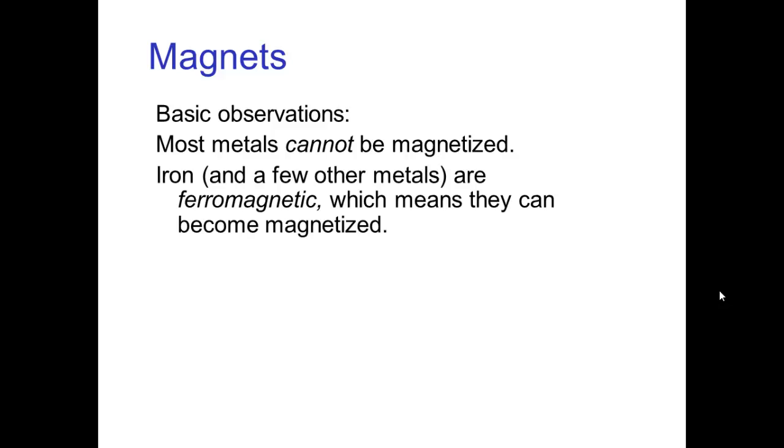However, iron and a few other metals and some alloys are said to be ferromagnetic, which means they can be magnetized and remain magnetized. Magnets attract ferromagnetic metals, so not every piece of iron is magnetized, but a magnet will attract a piece of iron whether it's magnetized or not.